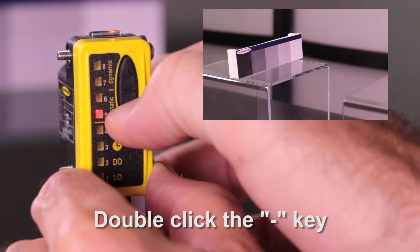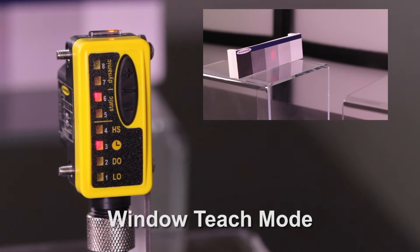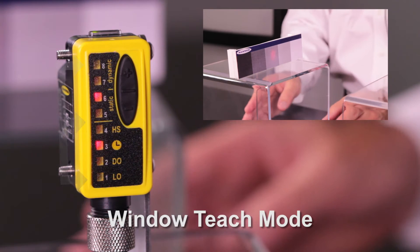To set the window, double click the minus button. The sensor is now taught to detect within its set window.